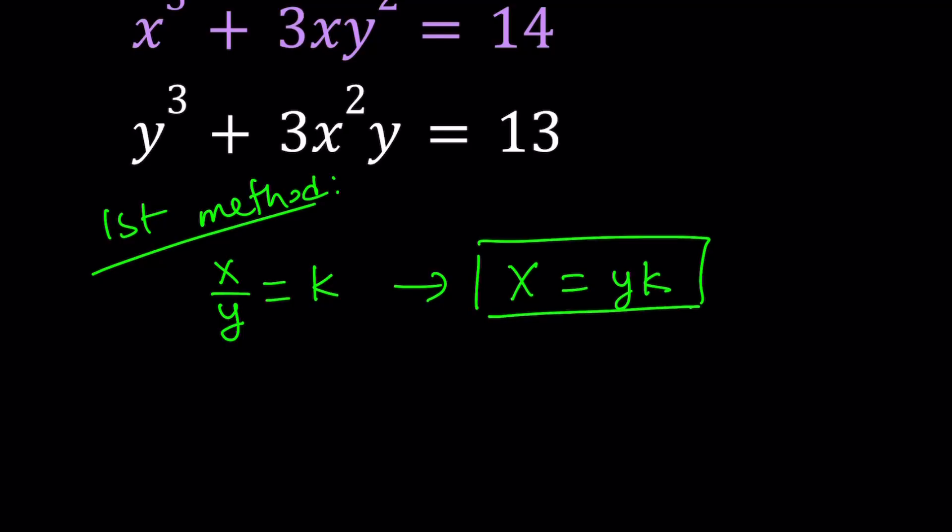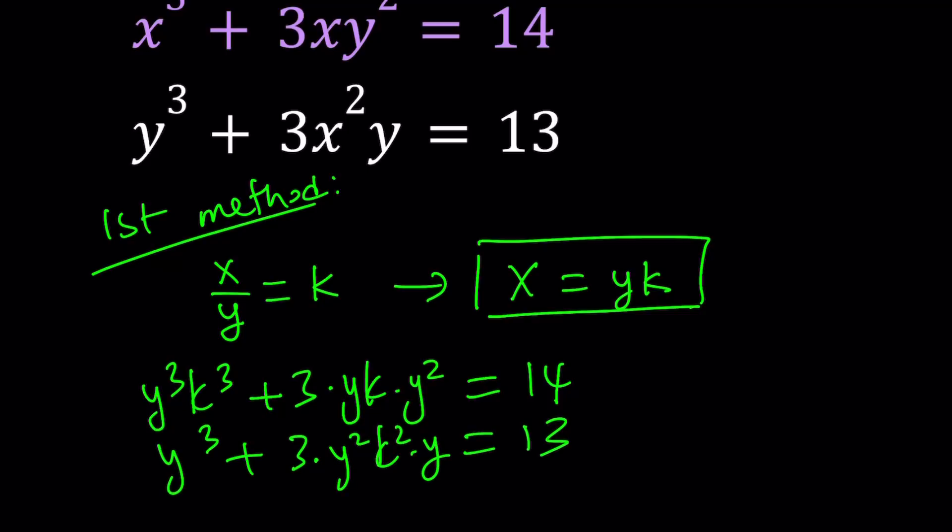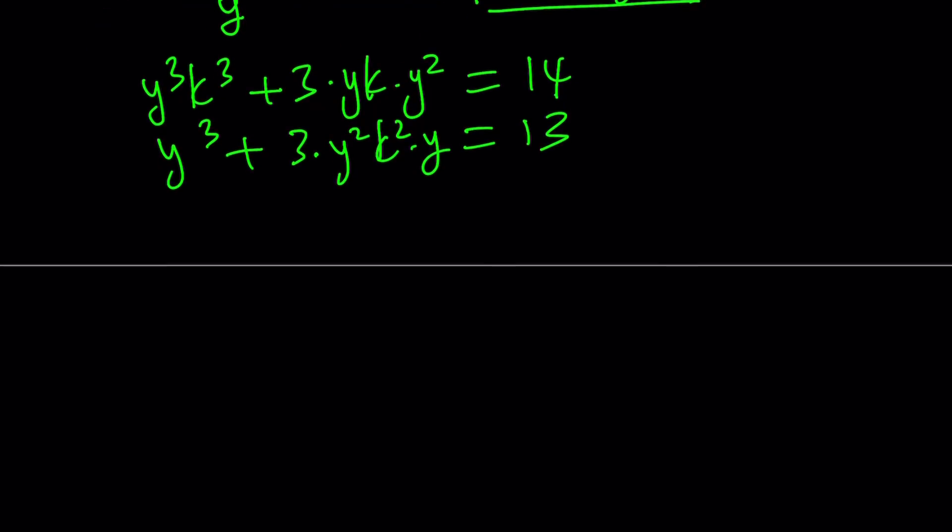Replace x with yk. So we're going to get y cubed k cubed plus 3 times yk times y squared equals 14. And we're going to get y cubed plus 3 times y squared k squared times y equals 13. Great. Let's go ahead and simplify this. We can definitely multiply these two together. That's going to give us y cubed. And these two is also going to give us y cubed. So we can basically factor out y cubed from both of these equations.